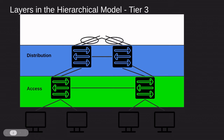Then we have the distribution layer, and its role is that it acts as a control boundary between the access layer and the core. Both the access layer and the core are essentially dedicated special-purpose layers. The access layer is dedicated to end device connectivity, and the core layer is dedicated to providing non-stop connectivity across the entire campus.